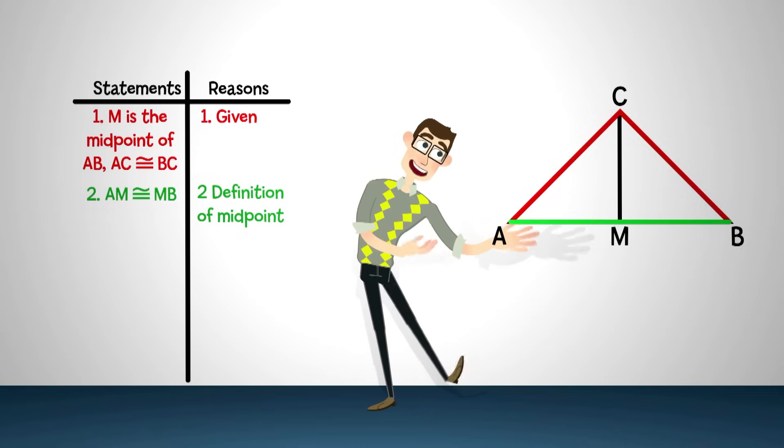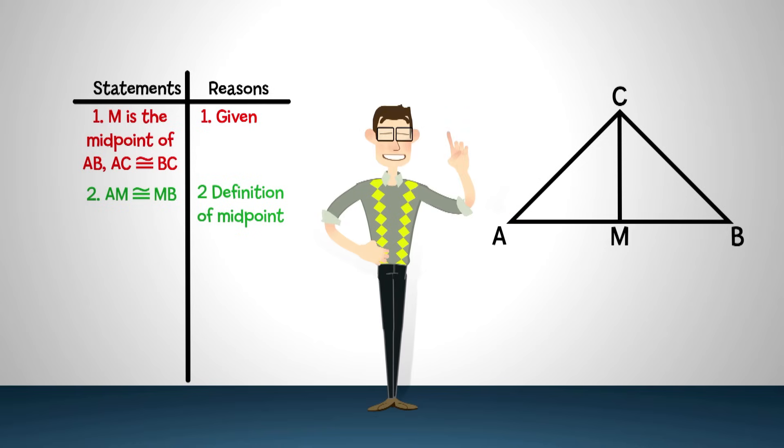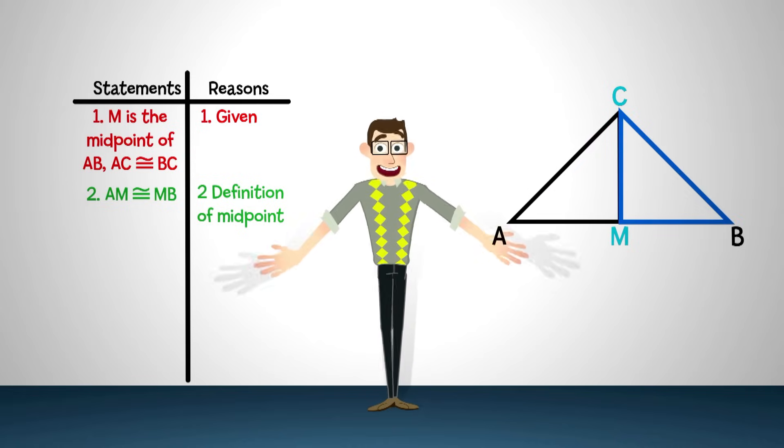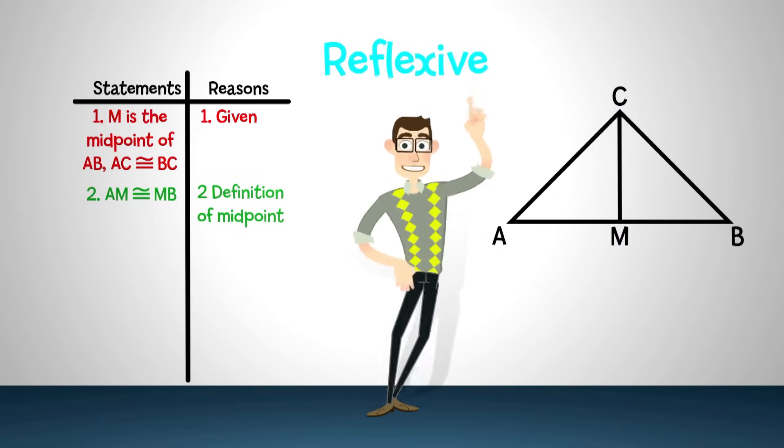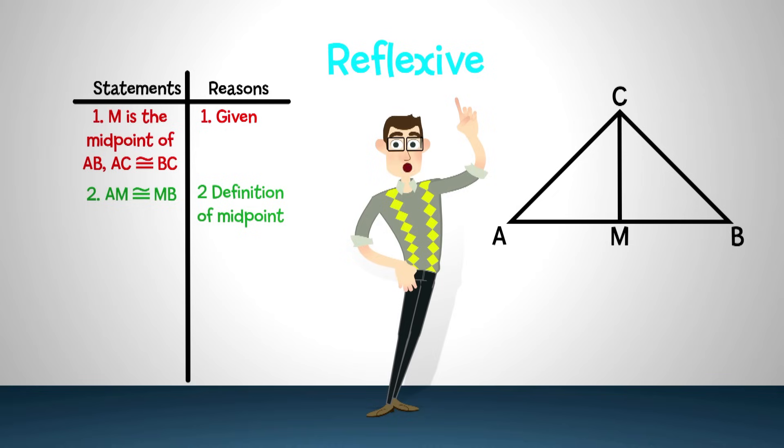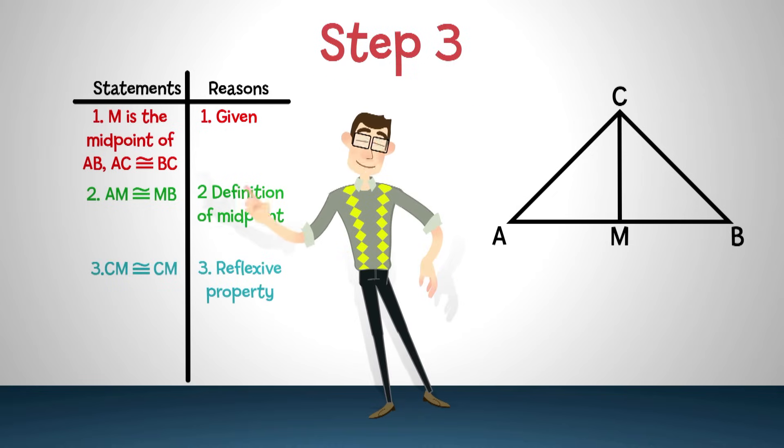Great! So far I have two pairs of sides that are congruent. The last one is easy. The third side of the left triangle is CM. And the third side of the right triangle is, well, also CM. They share the same side. Of course, it's congruent to itself. This is called the reflexive property. Everything is congruent to itself. I'll put this as step three.